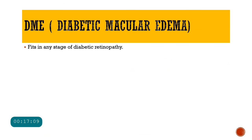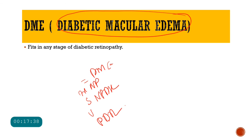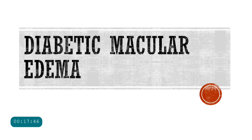Finally, one more classification is specific to diabetic macular edema. Diabetic macular edema can actually fit in any stage of diabetic retinopathy — it can occur with moderate NPDR, severe NPDR, very severe NPDR, PDR, or high-risk PDR. So diabetic macular edema is an entity that can occur at any stage of diabetic retinopathy.